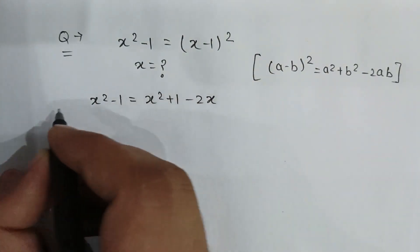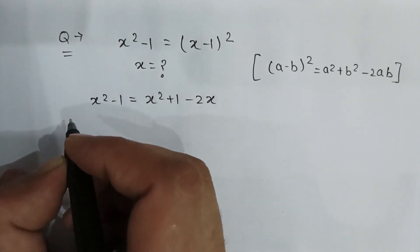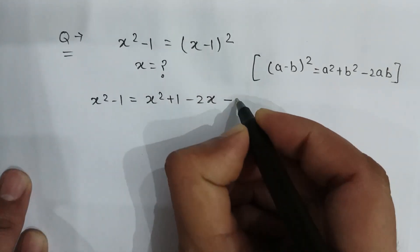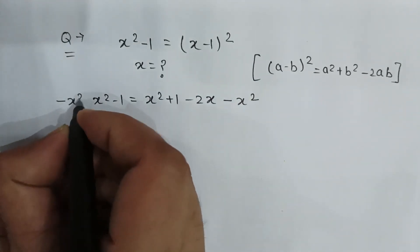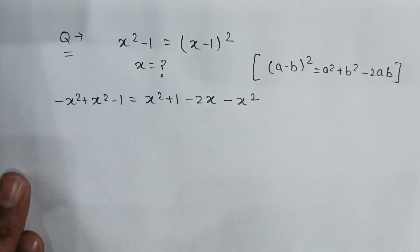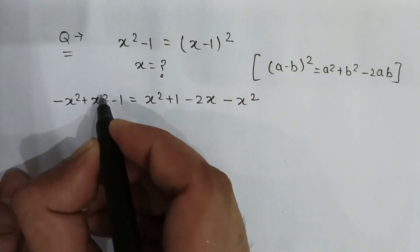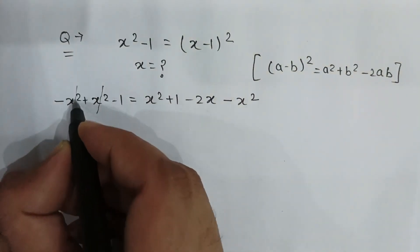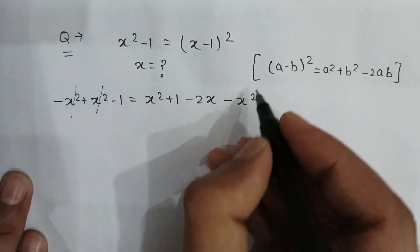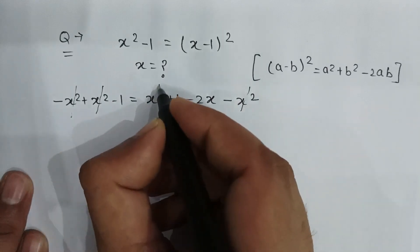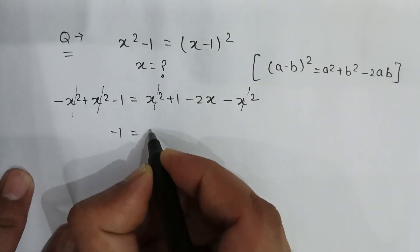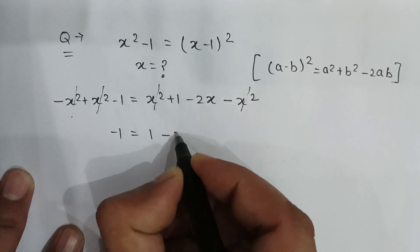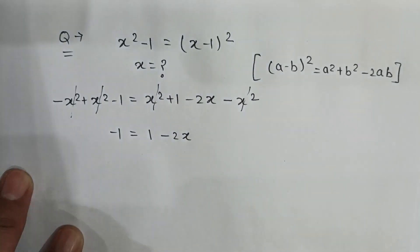Subtract x squared from both sides. x squared cancels out with x squared on both sides, so we get minus 1 is equal to 1 minus 2x.